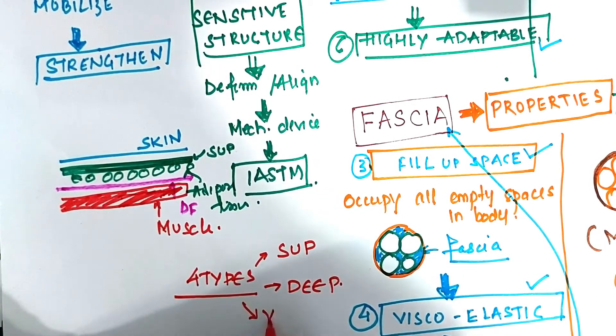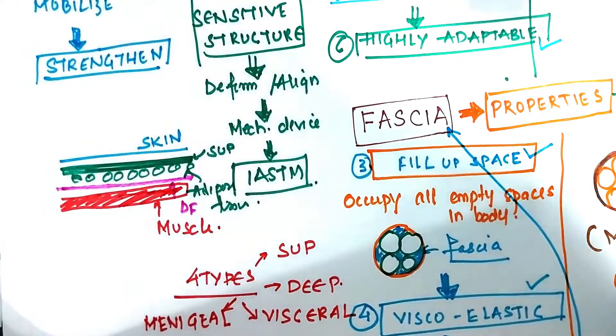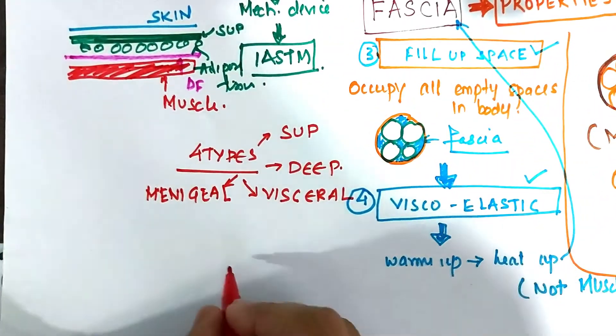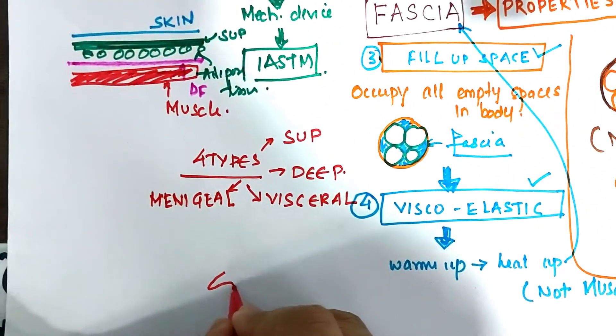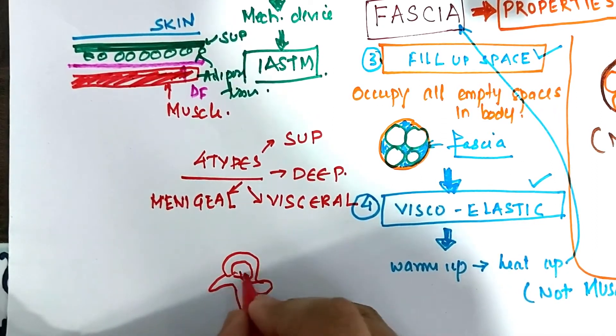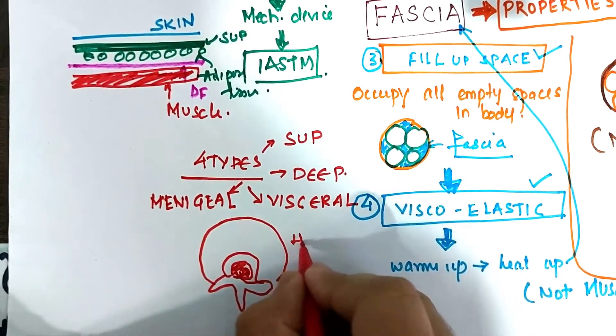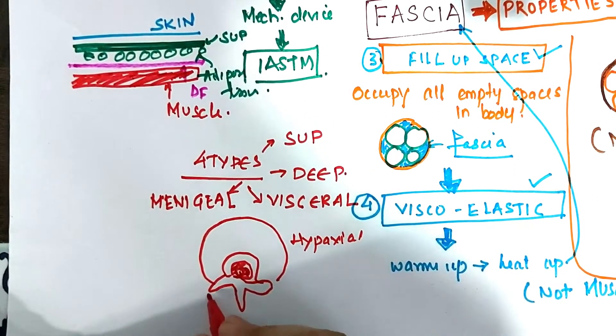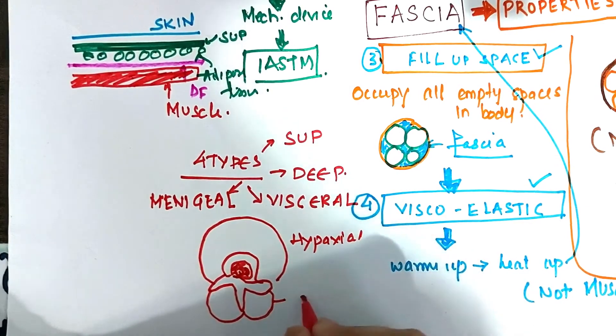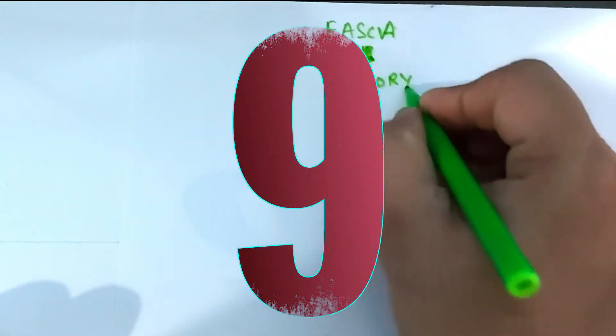So as discussed earlier in our lecture, there are four types of fascia: superficial, deep, visceral and meningeal fascia. When you take a transverse section in relationship to that of the transverse process, anything anterior, that is the anterior compartment, is called as the hypaxial fascia and anything posterior surrounding the paraspinal is called as the epaxial fascia.